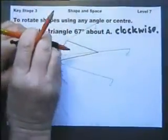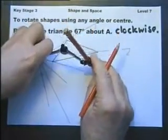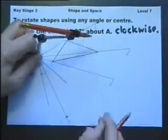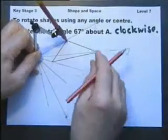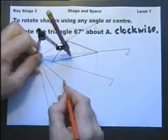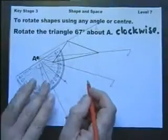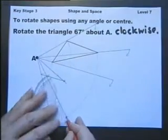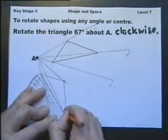Then we can take this point and move it round to its new position there, and take the last point and move it to its new position there. Then join up new positions of the vertices of the triangle, and we have rotated it 67 degrees as required.